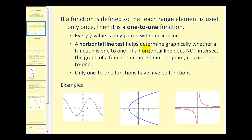A horizontal line test helps determine graphically whether a function is one-to-one. If a horizontal line does not intersect the graph of a function in more than one point, it is a one-to-one function. And what's so important about this is that only one-to-one functions have inverse functions.